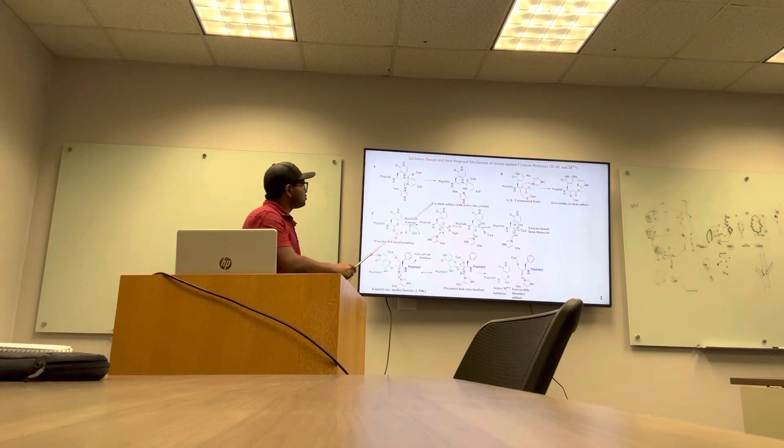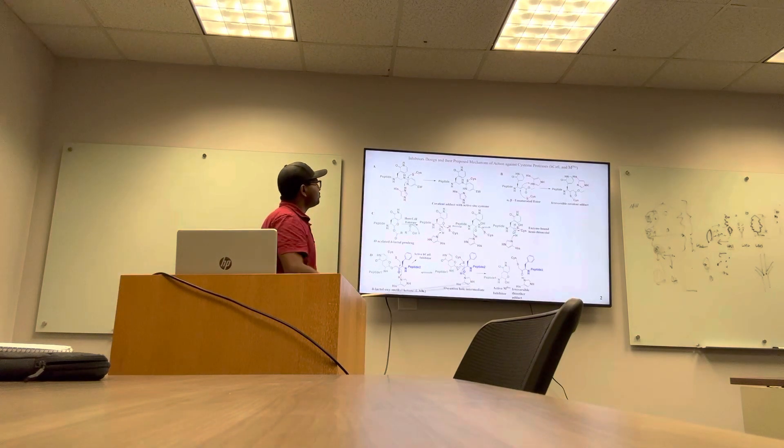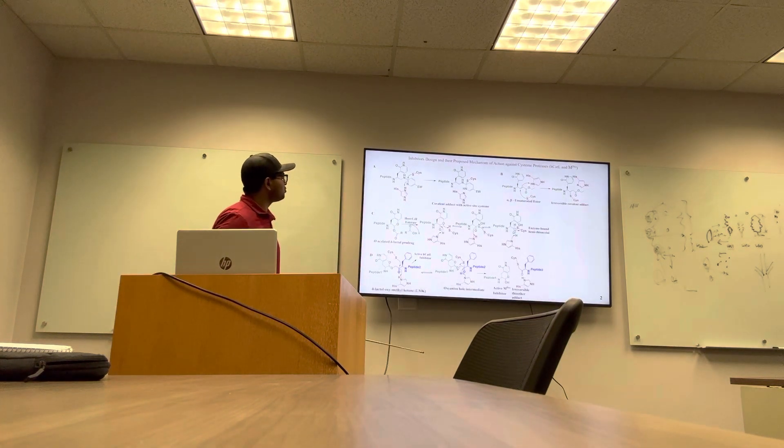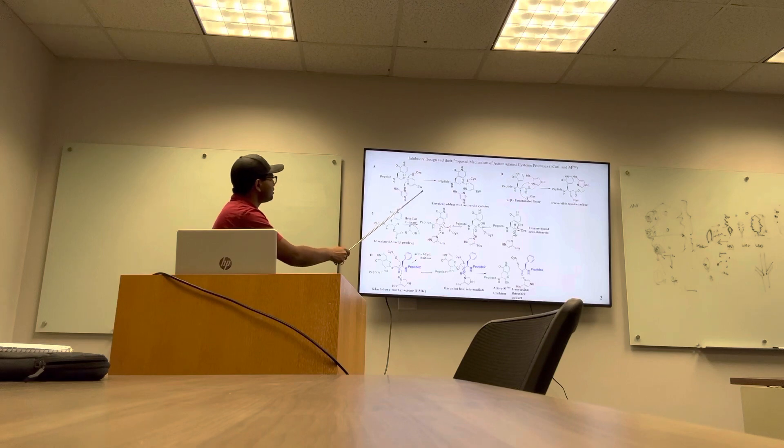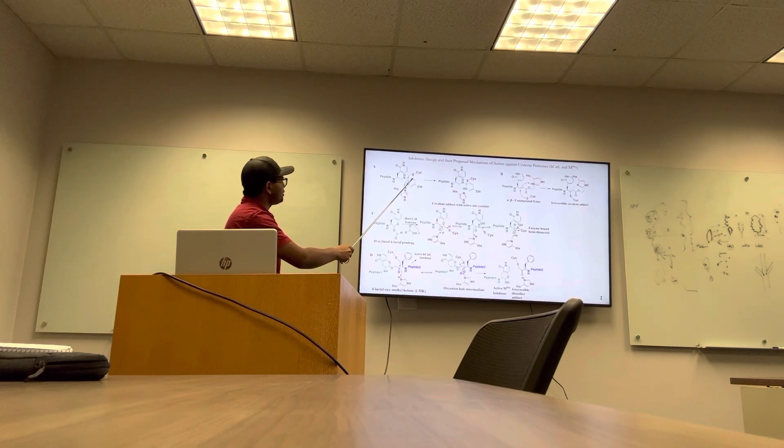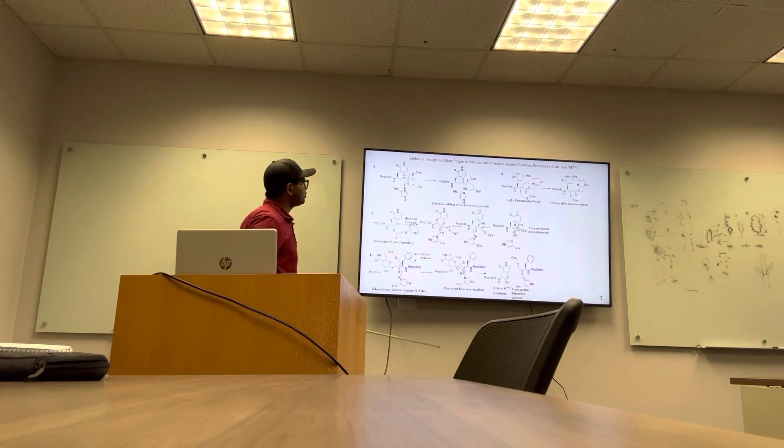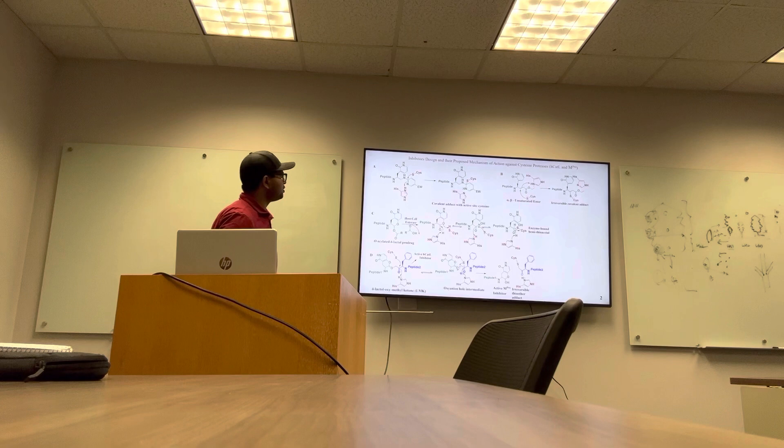These are the proposed mechanisms of action for the warheads described in this proposal. First is activated aminopyridines. The pyridine system is activated by incorporating electron-withdrawing substituent at the fifth carbon such that pyridine has become amenable for cysteine-thiolate attack and forms covalent adduct with active site cysteine.